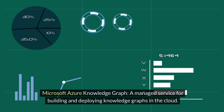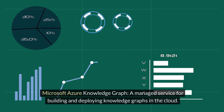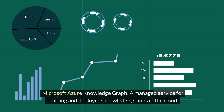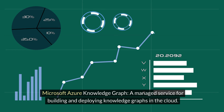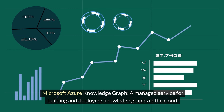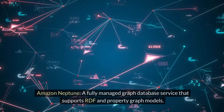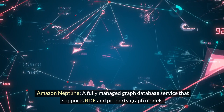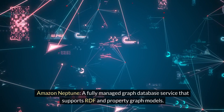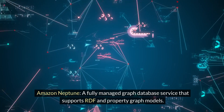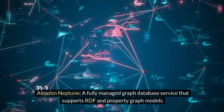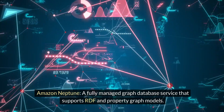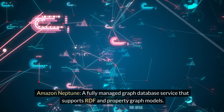3. Microsoft Azure Knowledge Graph, a managed service for building and deploying knowledge graphs in the cloud. 4. Amazon Neptune, a fully managed graph database service that supports RDF and property graph models.